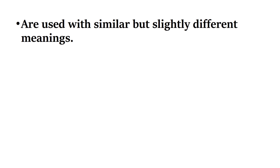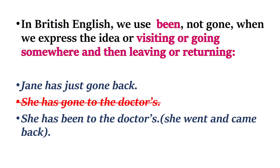The next part is about 'gone' and 'been'. Gone and been are used with similar but slightly different meanings. In British English, we use 'been' not 'gone' when we express the idea of visiting or going somewhere and then leaving or returning. Example: Jane has just gone back. She has been to the doctors — she went and came back.